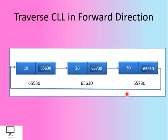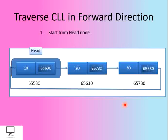This is the circular linked list available with me, and if I want to traverse it in the forward direction, here are the steps to follow. First, we have to start with the head node — let's highlight the head node. After that, we have to traverse the circular linked list until the next field of a node is holding the address of the head node, because this is a circular linked list.